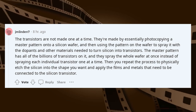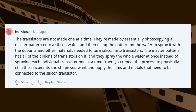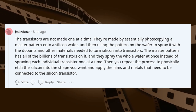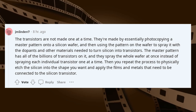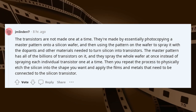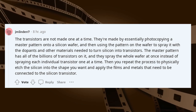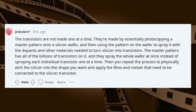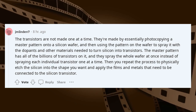The transistors are not made one at a time. They're made by essentially photocopying a master pattern onto a silicon wafer, and then using the pattern on the wafer to spray it with dopants and other materials needed to turn silicon into transistors. The master pattern has all of the billions of transistors on it, and they spray the whole wafer at once instead of spraying each individual transistor one at a time. Then you repeat the process to physically etch the silicon into the shape you want and apply the films and metals that need to be connected to the silicon transistor.